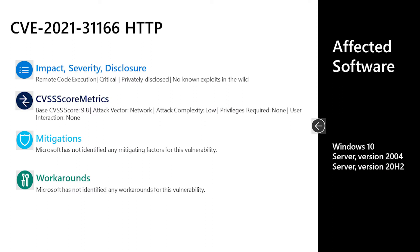Let's start with CVE-2021-31166. This is a remote code execution vulnerability in the HTTP protocol stack, rated at 9.8 out of 10 — certainly very, very high. As we can see, the attack vector is over the network, the complexity is low, no privileges are required, and no user interaction is required. A lot of times when we see vulnerabilities like this — no user interaction required, no privileges required — people might ask: is this a wormable vulnerability? In this case, the answer is yes. This meets the criteria of a wormable vulnerability.